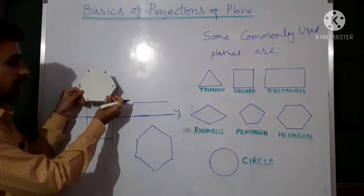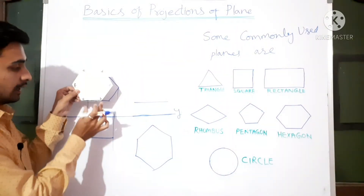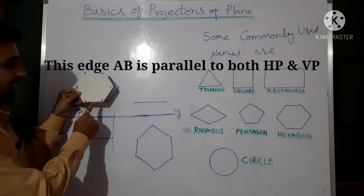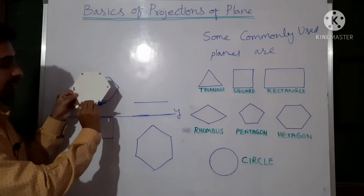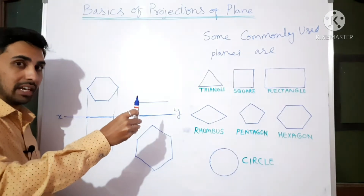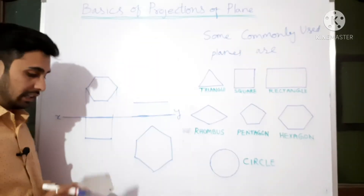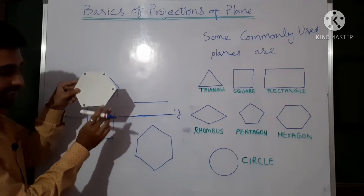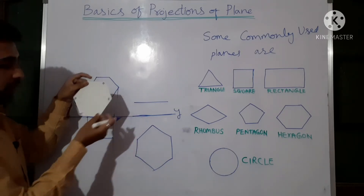Now suppose they say the object is in the VP or in front of VP with the condition that edge AB is parallel to HP — that means the edge is horizontal like this. Or if they say edge AB is perpendicular to HP, that means the edge is vertical. A line parallel to HP, inclined to HP, and perpendicular to HP — I have explained this in the projection of lines basics video.